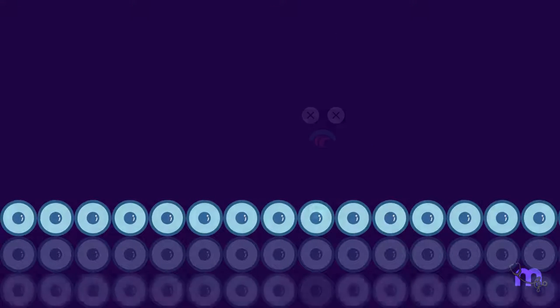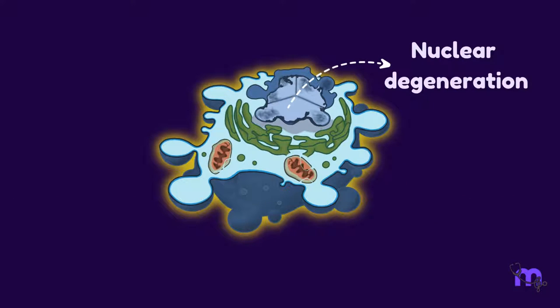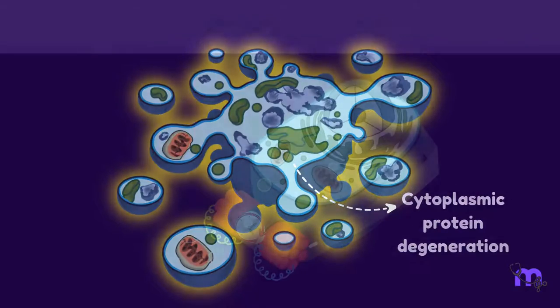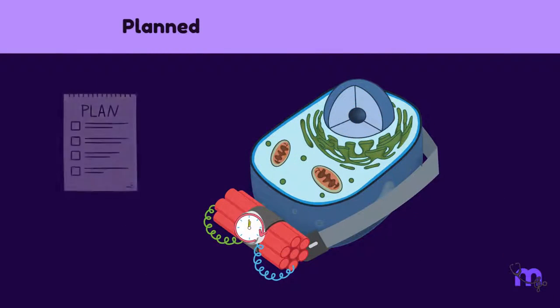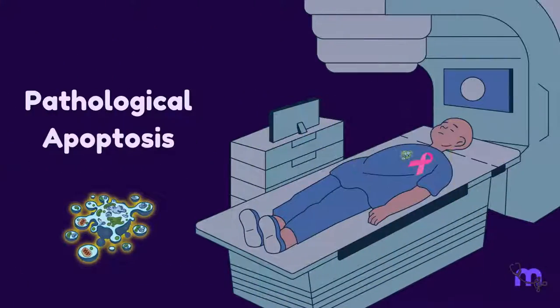Apoptosis is a pathway of cell death in which cells activate their own enzymes and degrade their own nuclear and cytoplasmic protein. It is described as a planned or programmed cell death and can either be physiological or pathological.